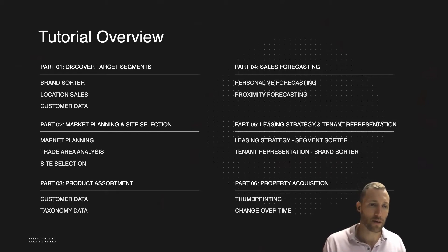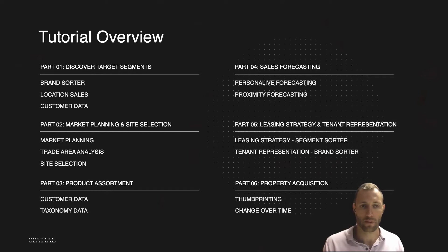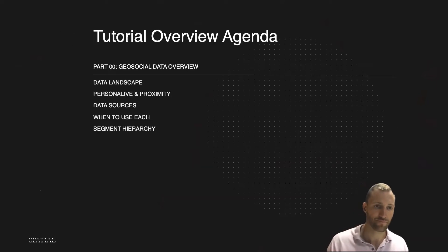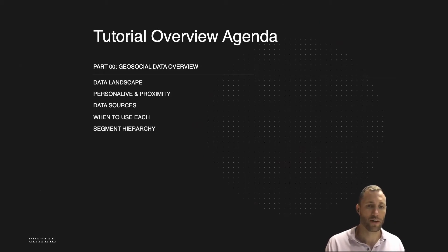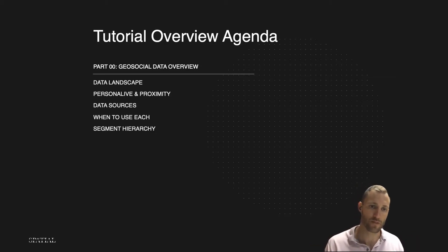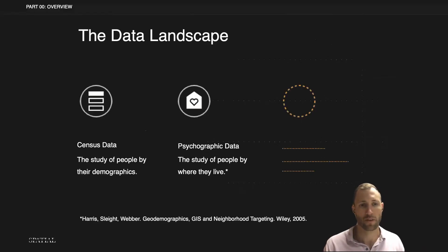I recommend everybody read or listen to the first one — part one, discover target segments — and the rest of them you can pick out what seems interesting to you and just skip to that section. So what we're going to be going through today in this overview video is a data landscape, our two data sets — Persona Live and Proximity — differences between them, the data sources that flow into them, when you would use each, and we'll finish up with segment hierarchy.